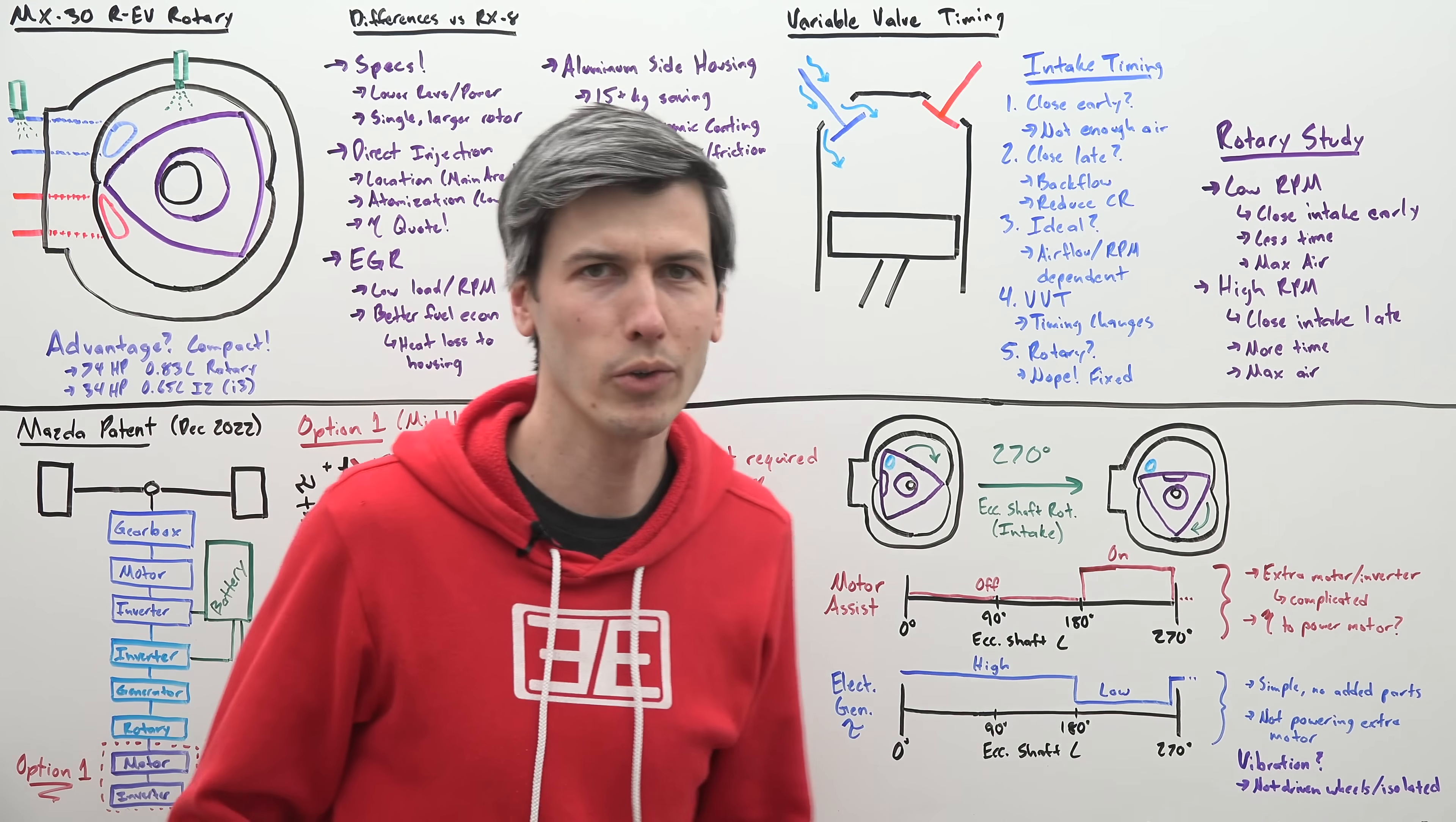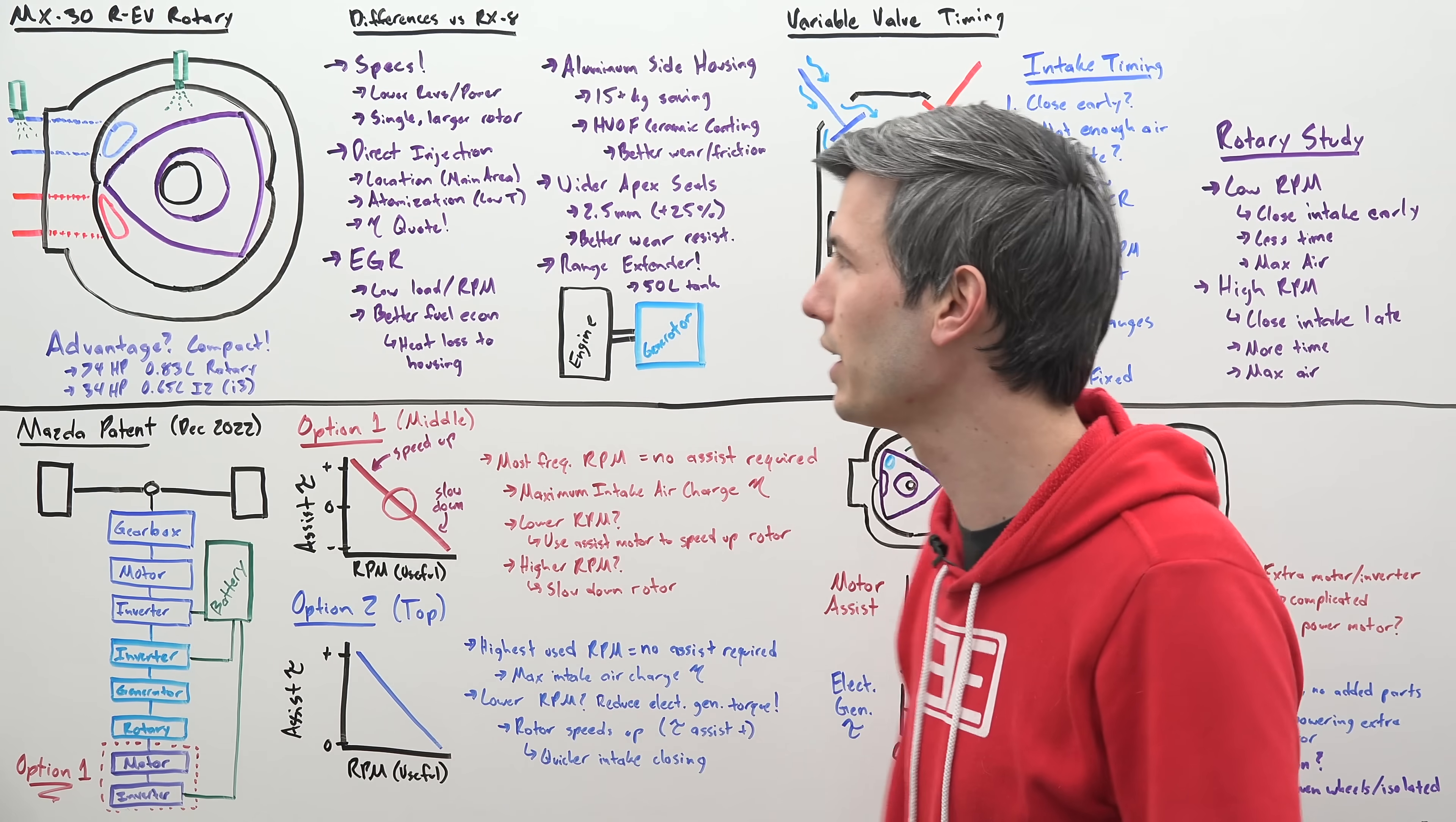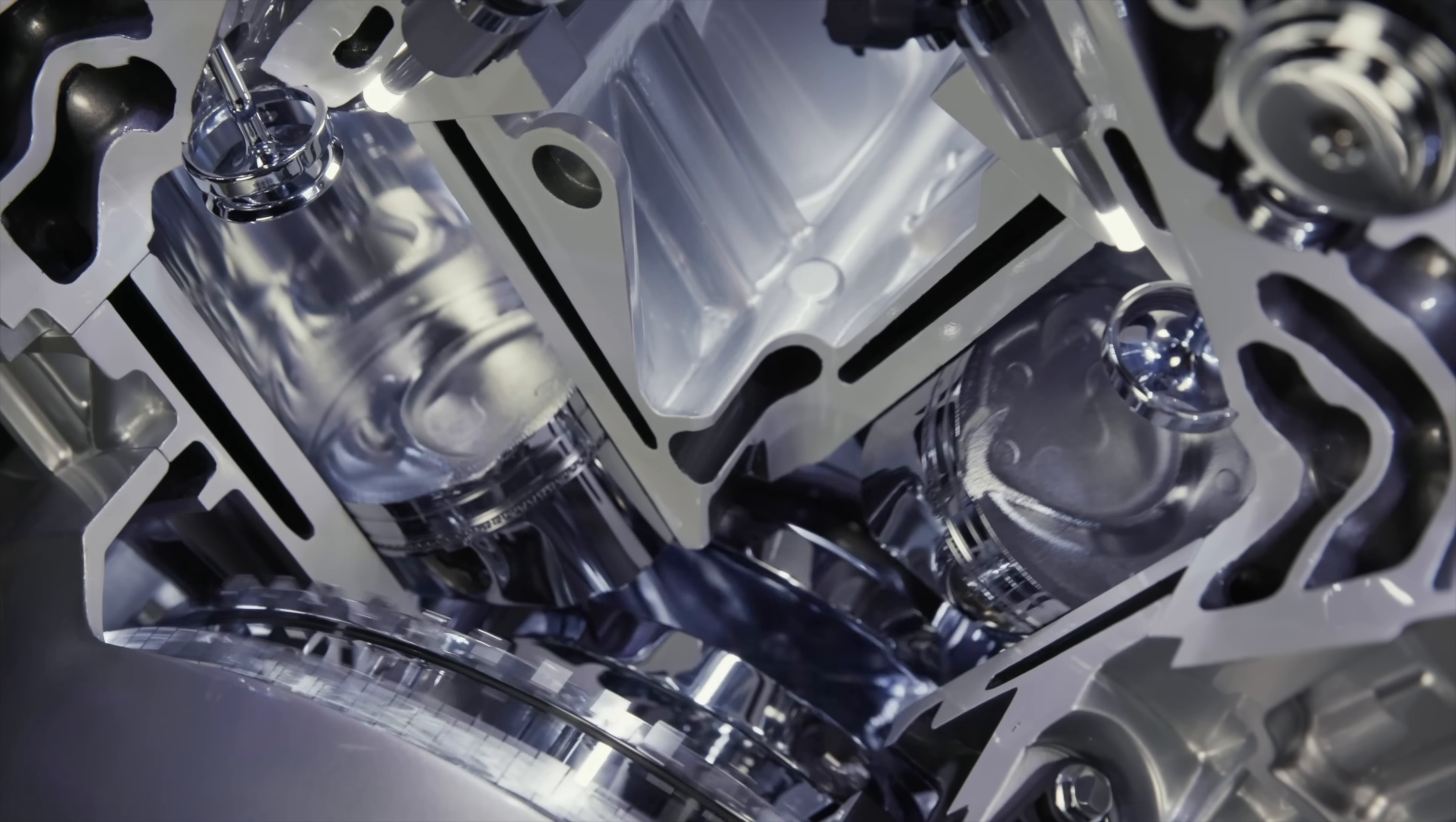So can you do that with a rotary? Well not exactly because we have this simple port and that port whenever it's exposed to the intake chamber here within our combustion chamber that's when you can pull air in and then once that rotor covers up that valve well then you can't pull in any more air. You don't really have control over when this is open. So you do have control over how you design this overall engine and you can optimize it for one specific RPM but you can't optimize it throughout the whole range unlike what you can do with piston cylinder engines.